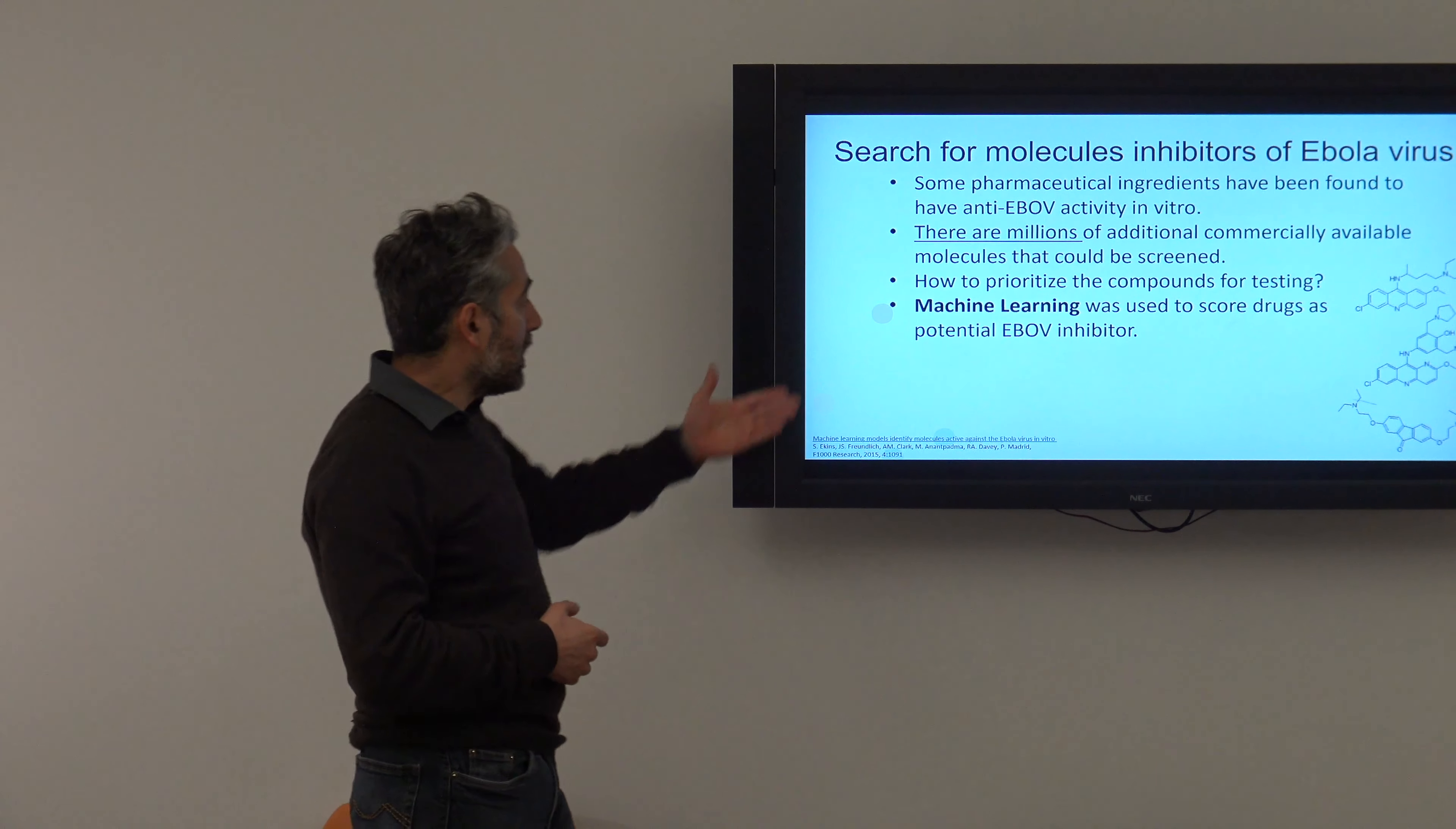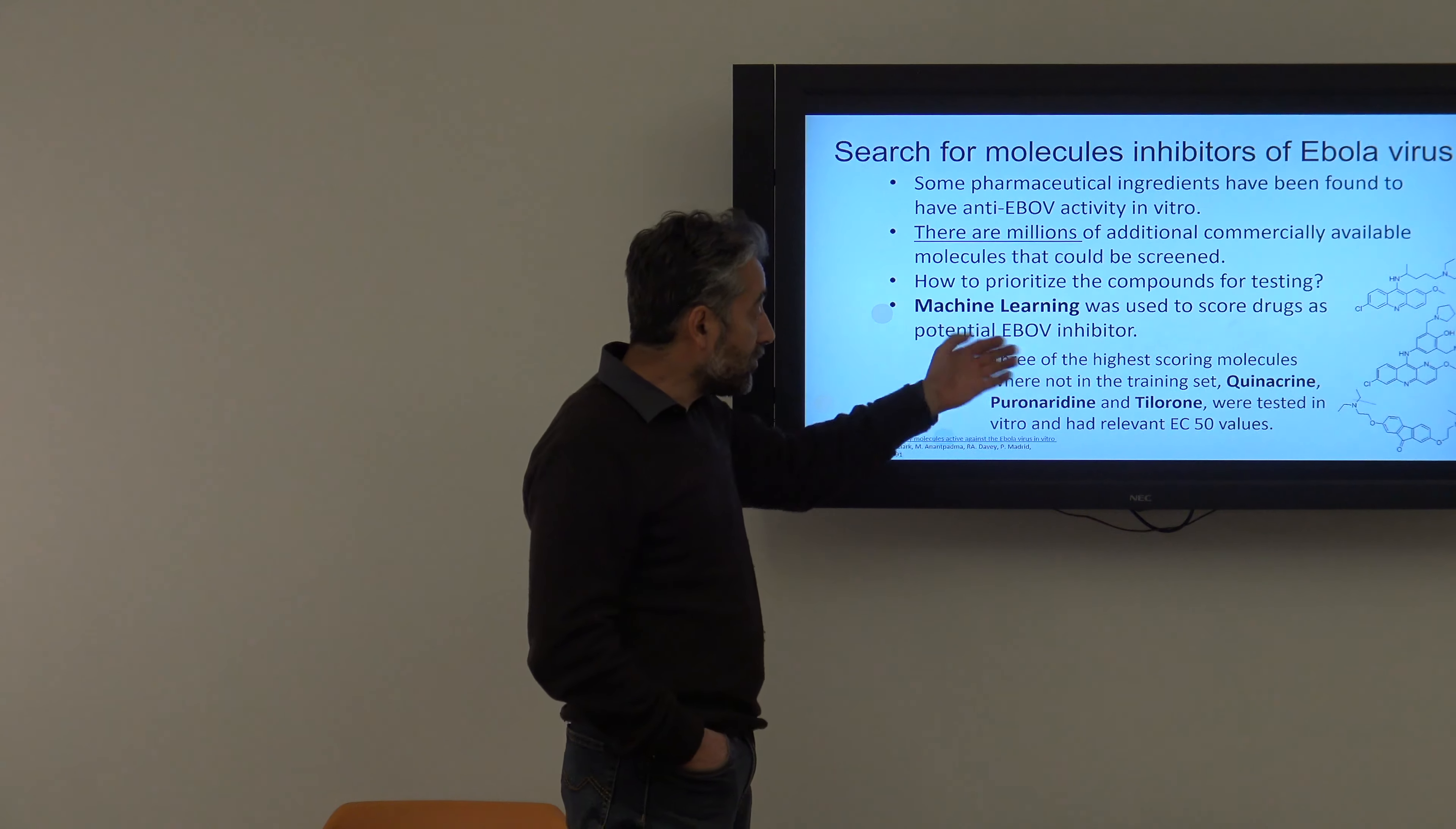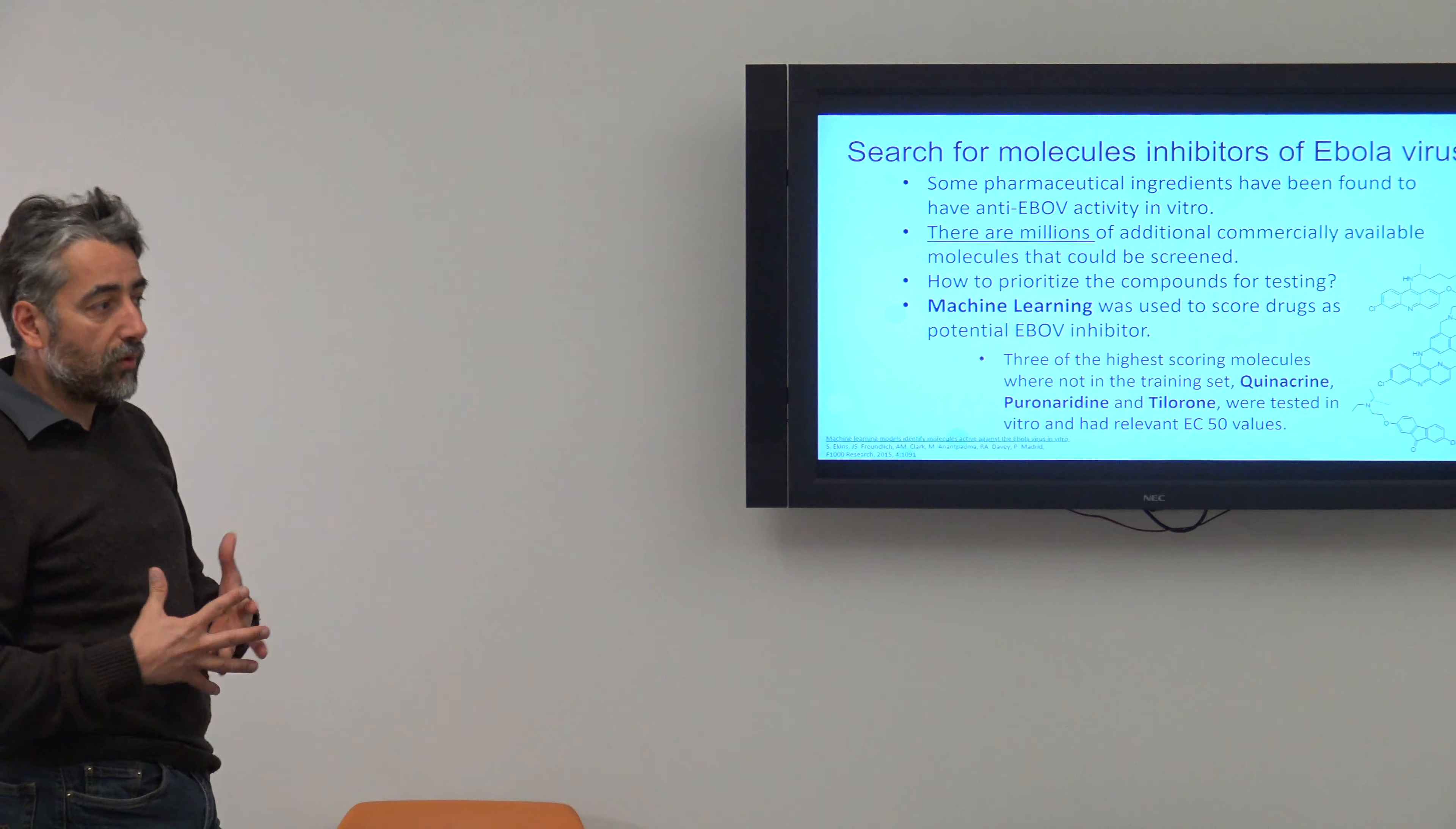Another use of, in this particular case, another use of machine learning is in pharmacology. So, as I said, Ebola virus is not something that you can treat. We don't have any drugs for that. But, of course, the companies are working on it. And there are some ingredients that are found to be anti Ebola virus activity in vitro. So they have to look at other different molecules to try. But there are millions of these commercially available. Which ones should they try? It's too many. It will take them a lifetime to try some of these.